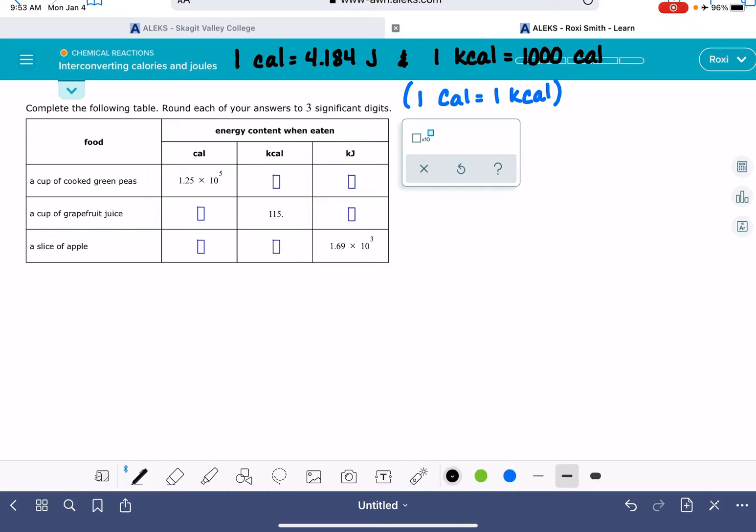When we are starting with calories, so we have 1.25 times 10 to the fifth calories, and we're converting that into kcals. Treat this like any type of unit conversion problem. Put the unit that you don't want down on the bottom, but the unit that you do want up on the top. One kcal is 1,000 calories or 10 to the third calories. And this is going to be 1.25 times 10 to the 2 kcal. So here we're just dividing by 1,000. This problem is telling us that we want to be rounding our answers to three sig figs. So we'll pay attention to that.